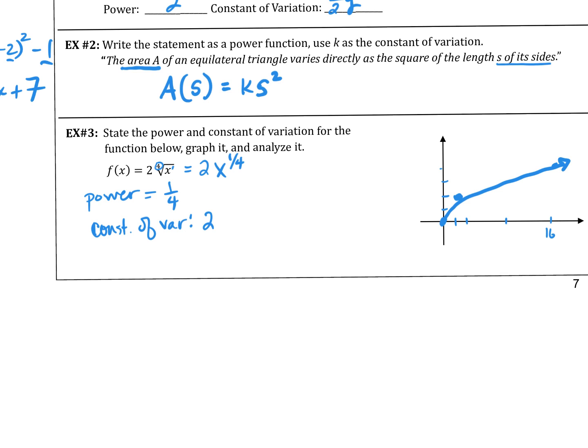Let's analyze this function. The function is increasing everywhere. Is it continuous? It has no holes, so it is continuous. Is it bounded? It is bounded below. Since it's bounded below, it has an absolute minimum — the absolute minimum is 0.